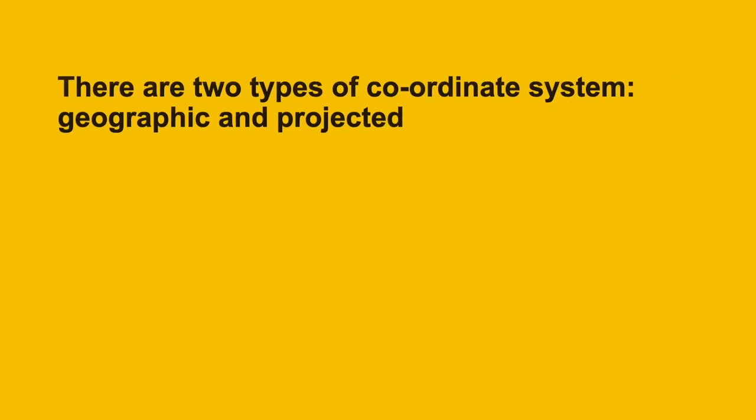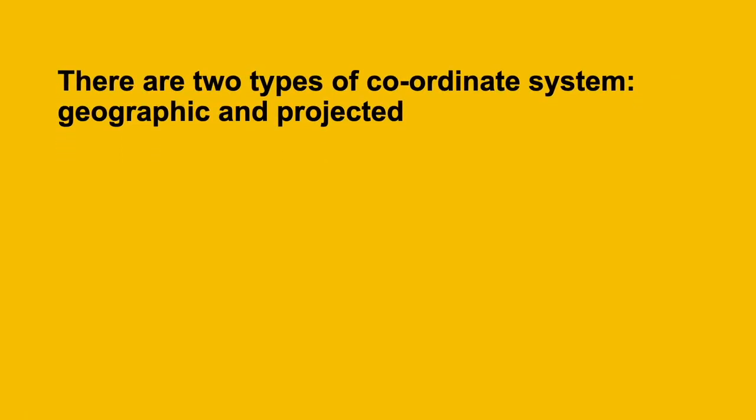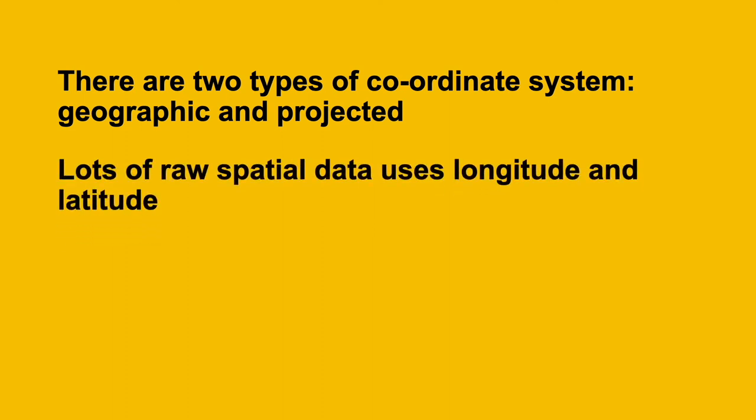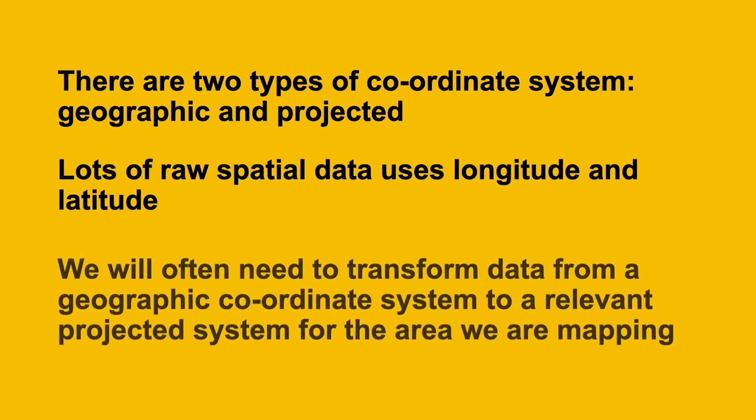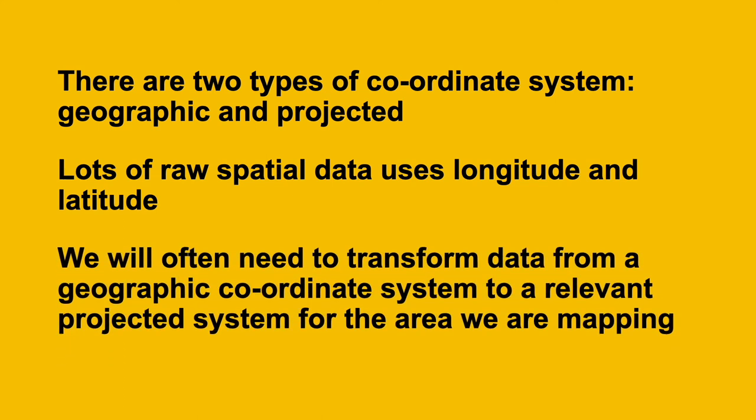In summary, there are two types of coordinate system: geographic, using latitude and longitude, and projected, relative to a particular origin point. Lots of raw spatial data, particularly data downloaded from the internet, uses longitude and latitude, so we'll often need to transform data from a geographic coordinate system to a relevant projected system for the area that we're mapping.